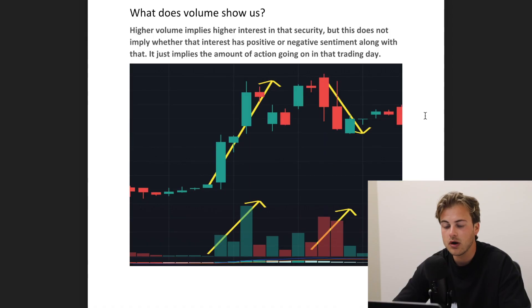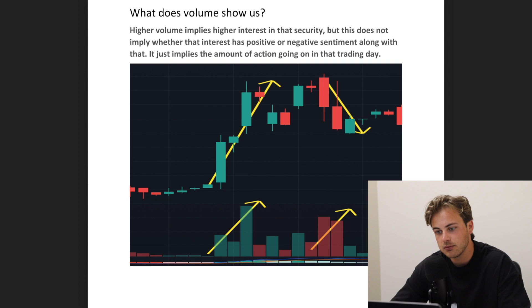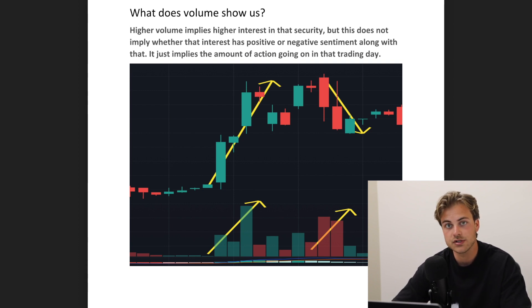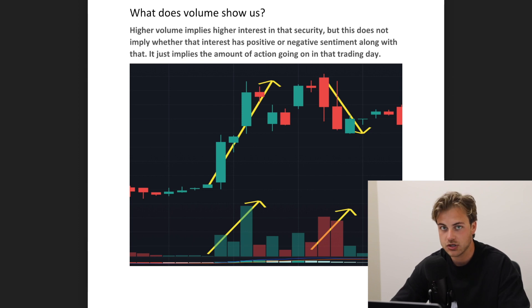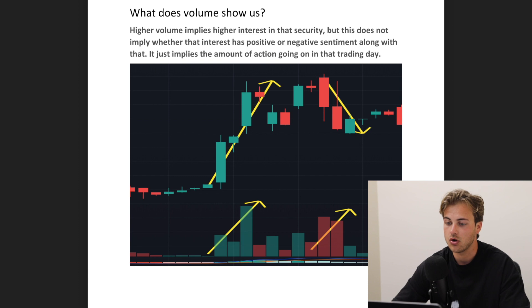Checking out my screen here, what volume shows us with those indicators at the bottom is that higher volume implies higher interest in the security. So volume being up means there are a lot more people trading that given security that day. But this does not necessarily imply which direction it's going — it just implies the interest, whether it's positive or negative sentiment.